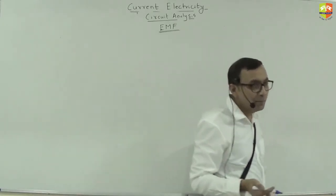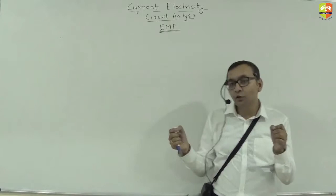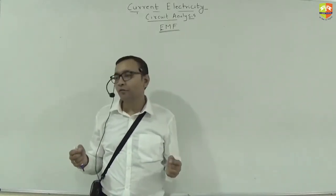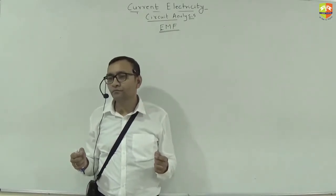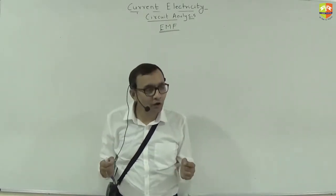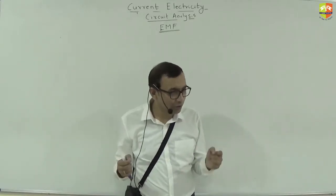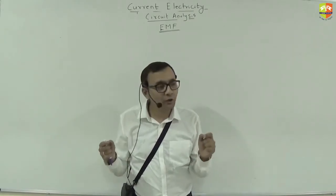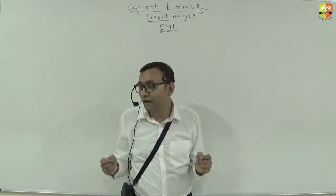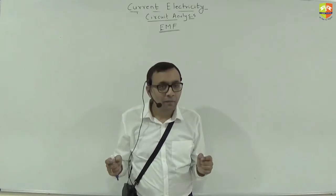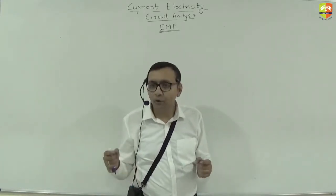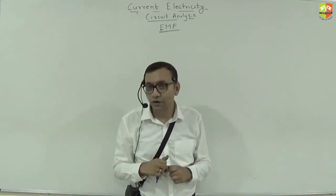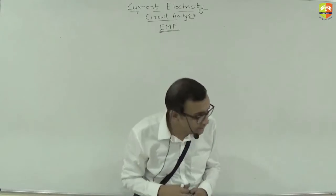Because of that, the potential difference across the two points in the battery is less than the EMF of the battery. EMF is the maximum amount of potential difference that can be there across the two points of the battery. But if internal resistance is there, that potential difference across the two points will drop. And how much it will drop? Let us see that.